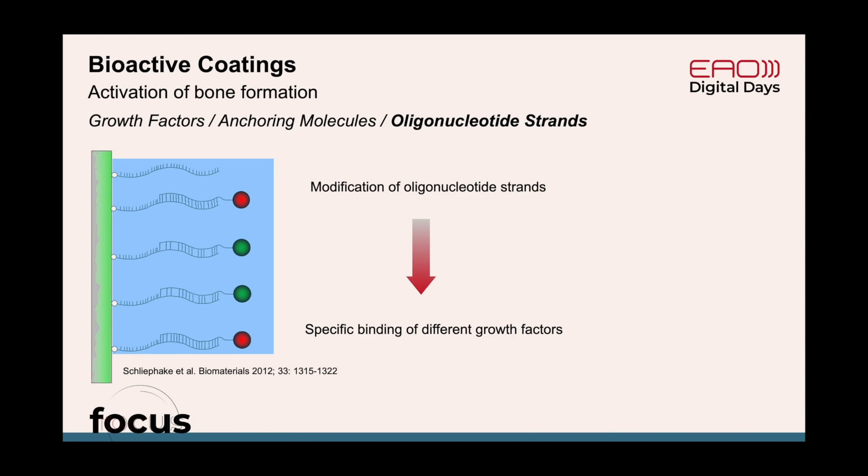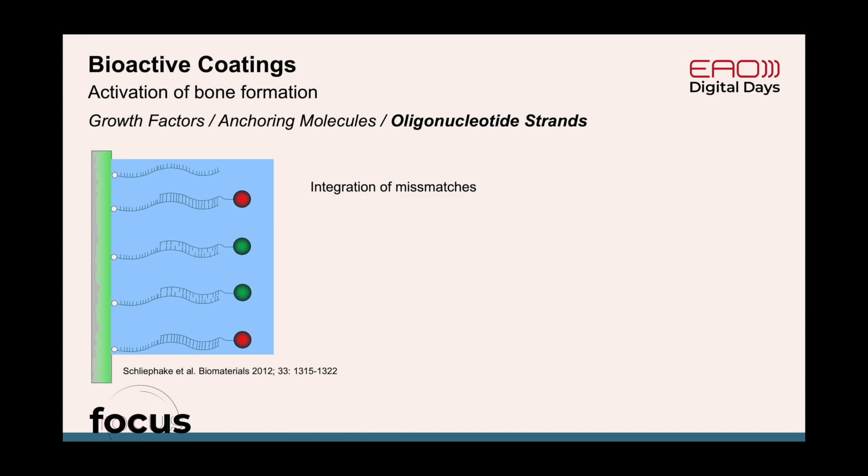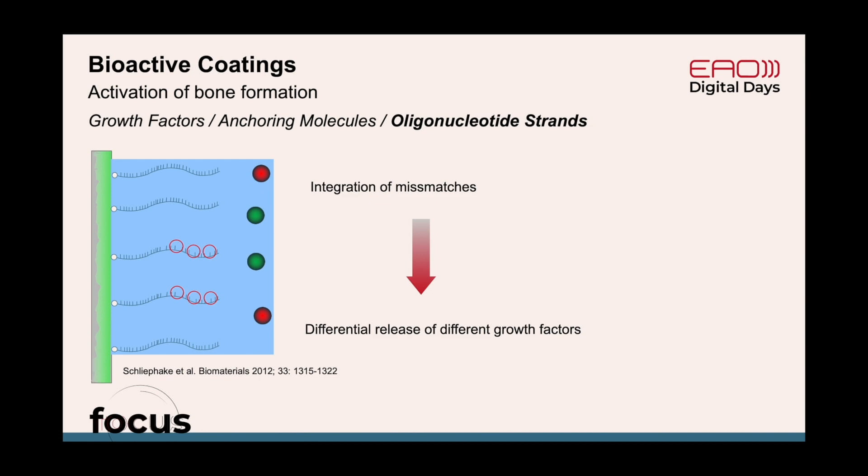Furthermore, if we incorporate mismatches into the oligonucleotide strands, we loosen the binding even more and can create different patterns of release — so that, for instance, VEGF is released first and then followed by BMP, which is something we would expect for wound healing next to an implant.